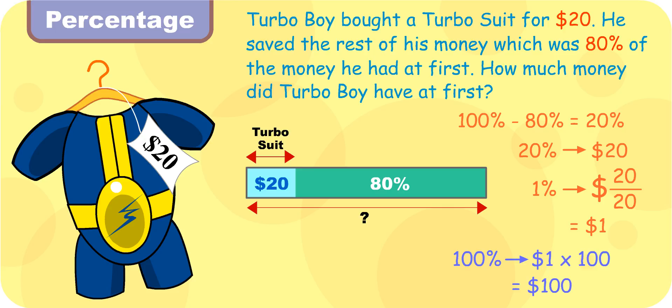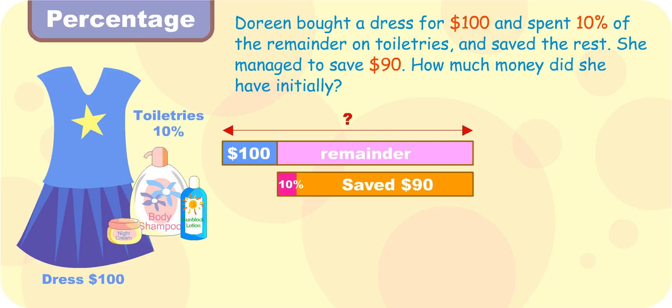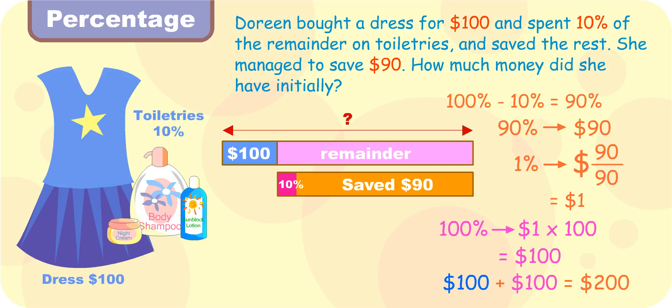Very good, Turbo Girl. We shall try to solve more challenging word problems. Doreen bought a dress for $100 and spent 10% of the remainder on toiletries and saved the rest. She managed to save $90. How much did she have initially, Turbo Girl? Taking the remaining portion as a whole, 100%. 100% minus 10% is 90%. Therefore, 90% of the remainder is $90. 1% is 90 divided by 90, which is $1. So 100% is $1 times 100, which gives us $100. Hence, the amount she had at first is $100 plus $100, which is $200.